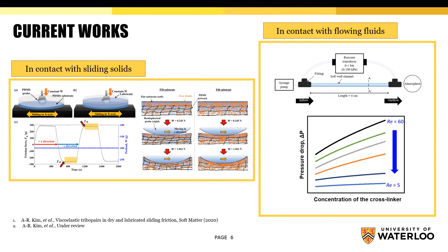We have studied friction between viscoelastic tribological pairs in dry and lubricated sliding conditions, and we could find that the role of loss tangent is predominant in the system, which is the ratio of the shear loss modulus to the shear storage modulus. We also fabricated PDMS wall channels inside rigid backing tubes, and we could find that the measured pressure drop does not follow the classical Hagen-Poiseuille equation, and there is a reduction in the pressure drop which depends on the concentration of the crosslinker.